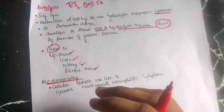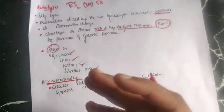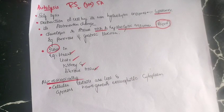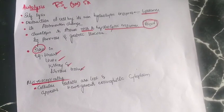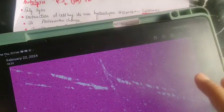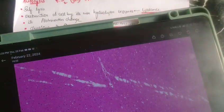The microscopic feature of autolysis is that the entire structure appears homogeneous and eosinophilic, because the cell wall has been destroyed and the nucleus may have dissolved. As you can see in this microscopic image of autolysis, it appears as a homogeneous eosinophilic structure. If you found this video helpful, please like, share, and subscribe to my channel.